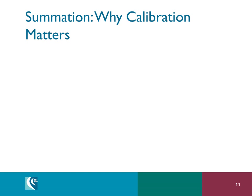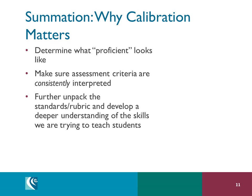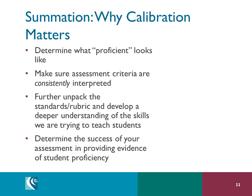As with those real-world situations you just discussed, teachers need to have a common understanding about how to measure student performance to ensure learning is assessed accurately and consistently. Students, parents, and other stakeholders know that there is a common standard and understanding of proficiency for all students. First, you must decide what proficiency looks like. Next, make sure assessment criteria are consistently interpreted. Then, further unpack the standards. And finally, determine the success of your assessment.